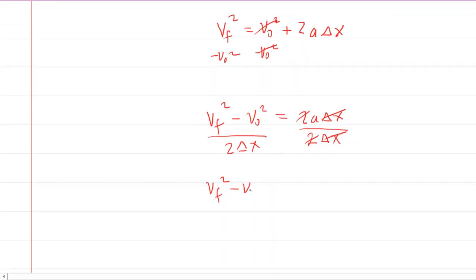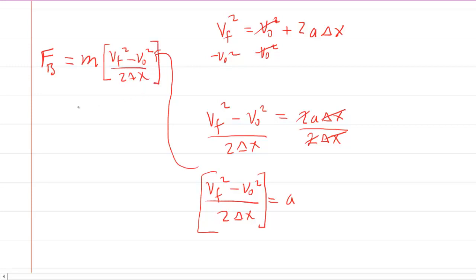And once we have this expression for the acceleration, we can actually come back and plug this expression back into the Newton's second law that we were developing earlier. We had the force acting on the bullet equals the mass of the bullet times the acceleration. And again for the acceleration we're just going to fill in this new expression that we've just determined. And then all we have to do is just plug in the known information and we've got the force that's being exerted on the bullet.